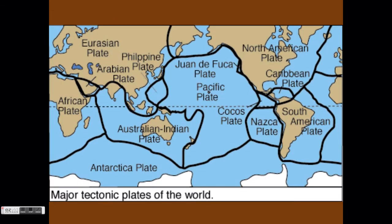There are seven major tectonic plates and six smaller ones. The largest tectonic plate is the Pacific plate. Look closely at this picture. Often the edges of plates make up the edge of a continent, and the plates themselves are often named after the continents they make up.